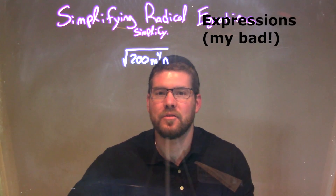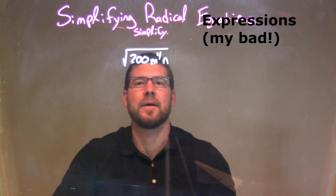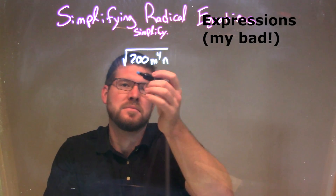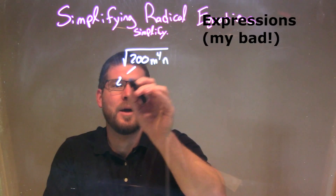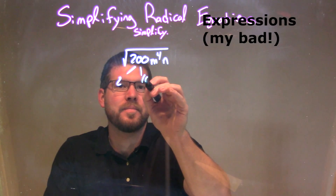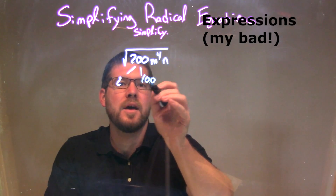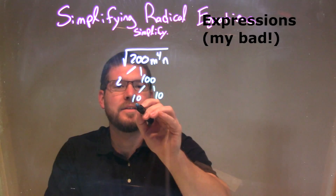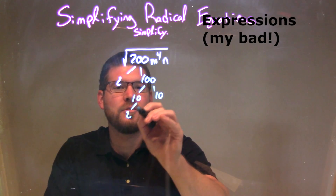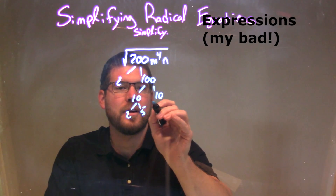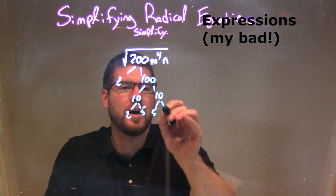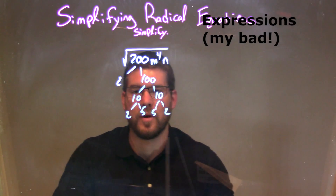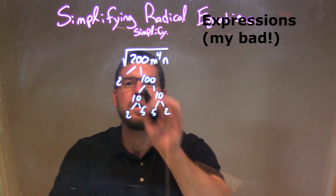Let's do a prime factorization on 200. It's 2 times 100, and 100 is just 10 times 10. And 10 times 10 is 2 times 5 times 2 times 5 — whatever way you want to do it.